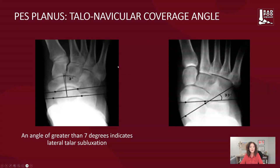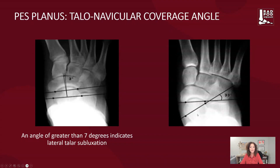Looking at the talonavicular coverage angle and tunneling in — remember, we want to get to the articular endpoints of the navicular and the talus, and then bisect that. We can see that the angle should be near neutral. When we have a situation in pes planus, notice that the angle is increasing. That's a situation seen in pes planus: an elevated talonavicular coverage angle.